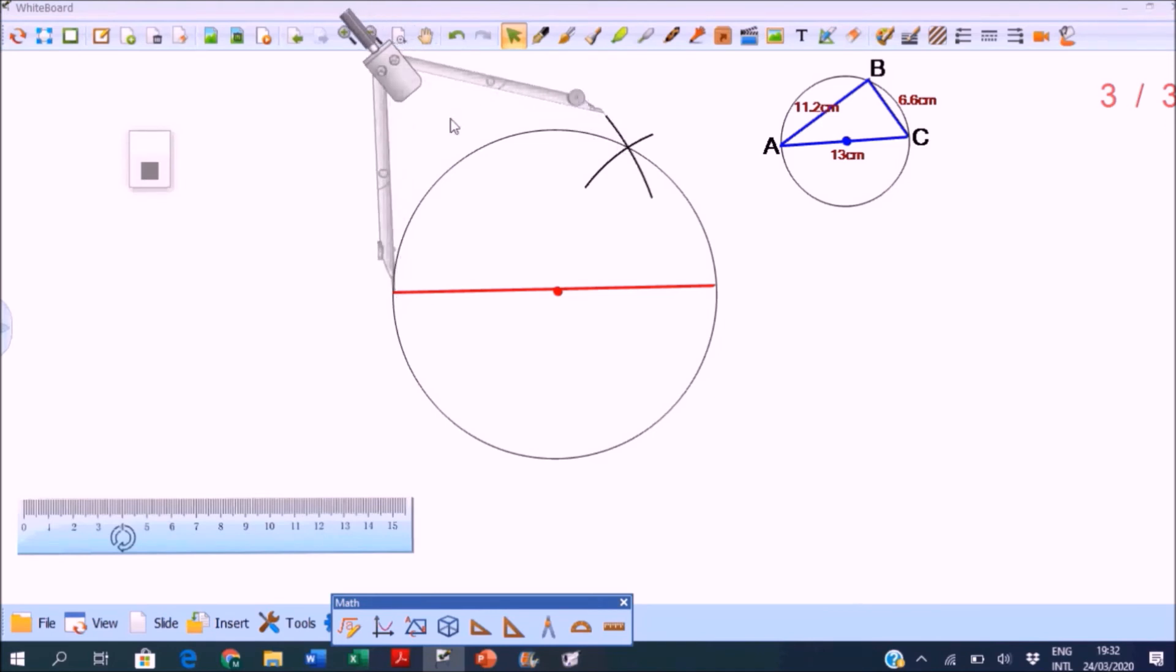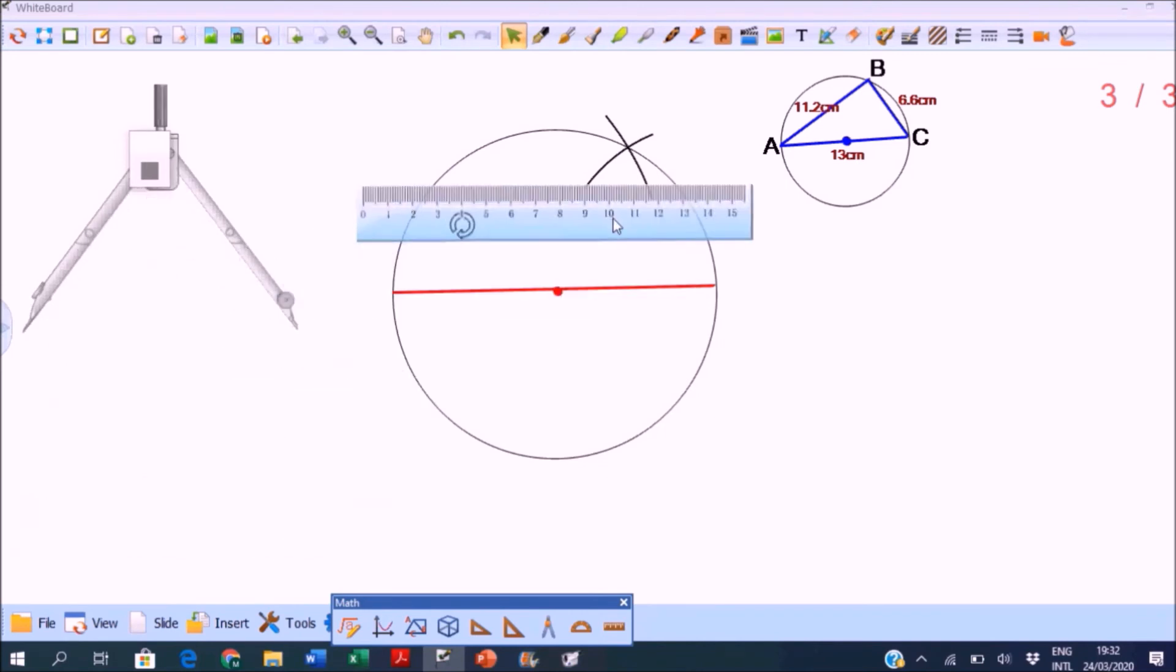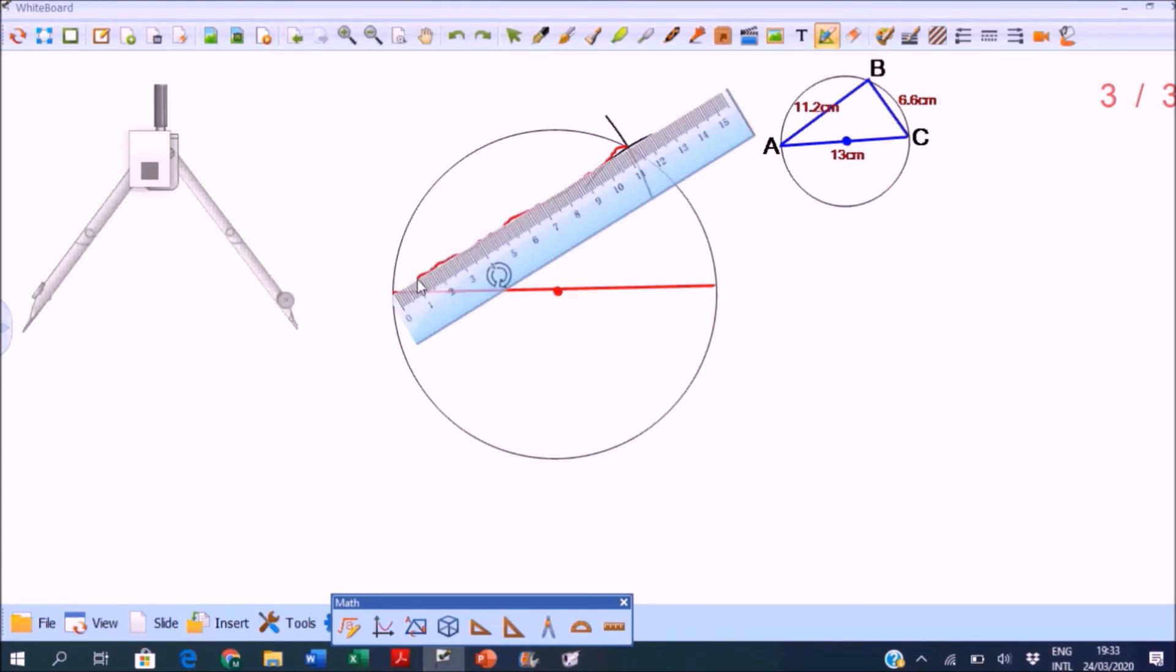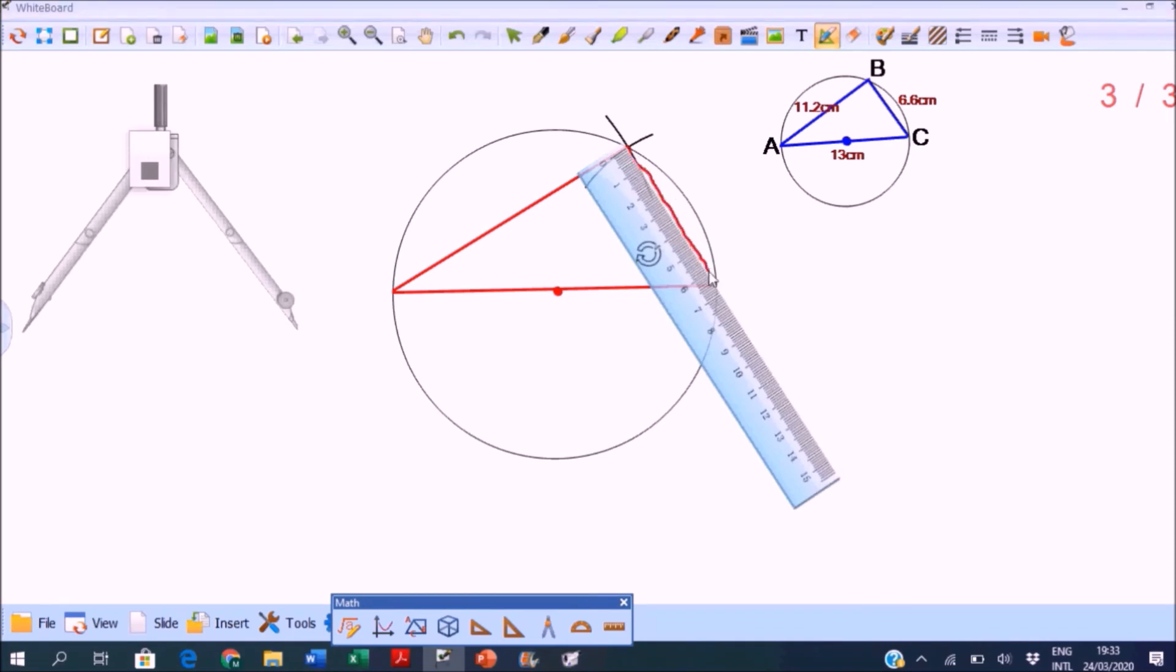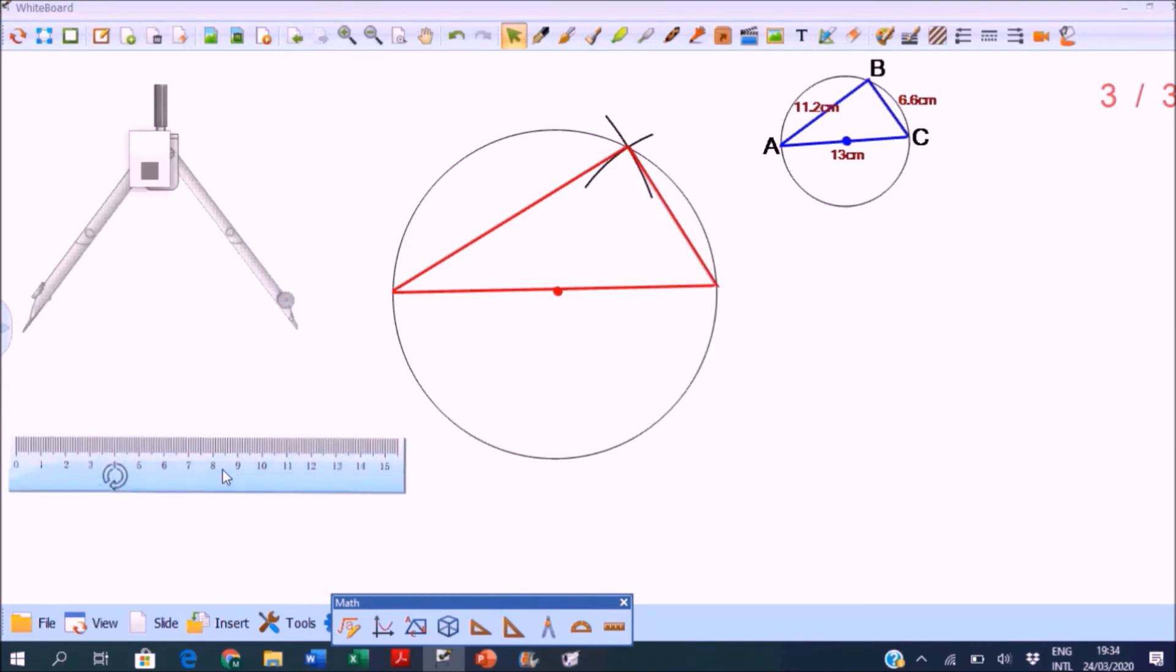Use your ruler to connect the intersection of these arcs to the endpoints of your diameter. Make sure that this is 11.2 and this shorter side is 6.6 centimeters. Now this is triangle ABC.